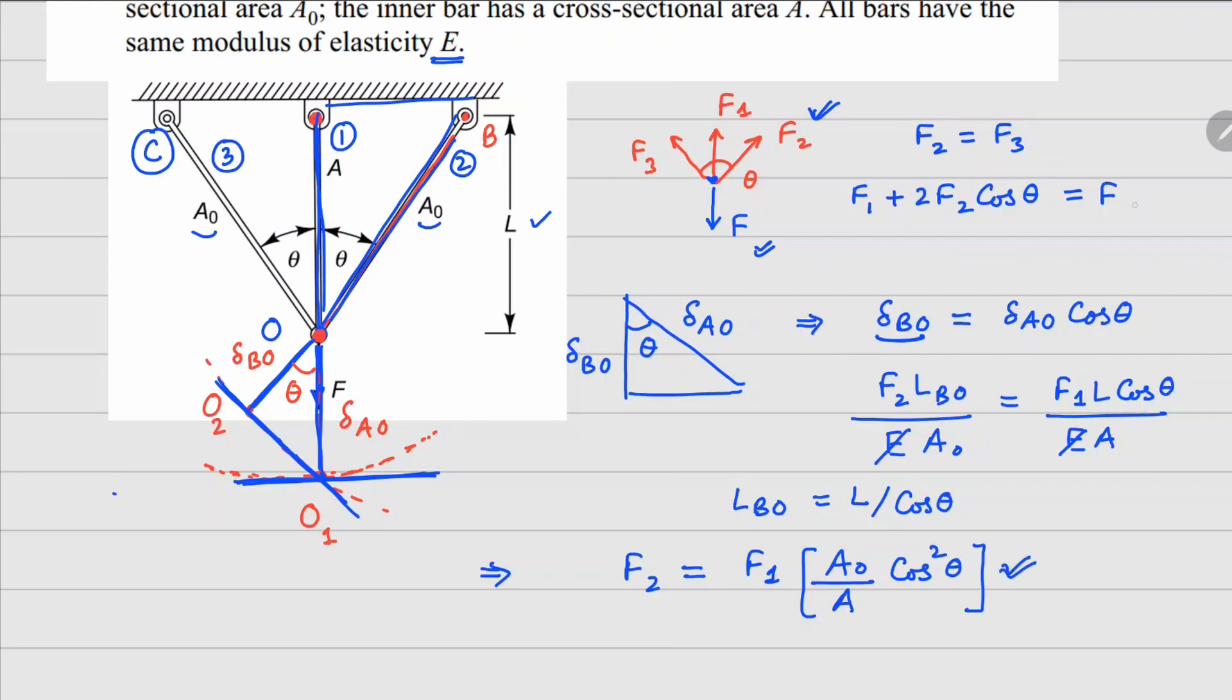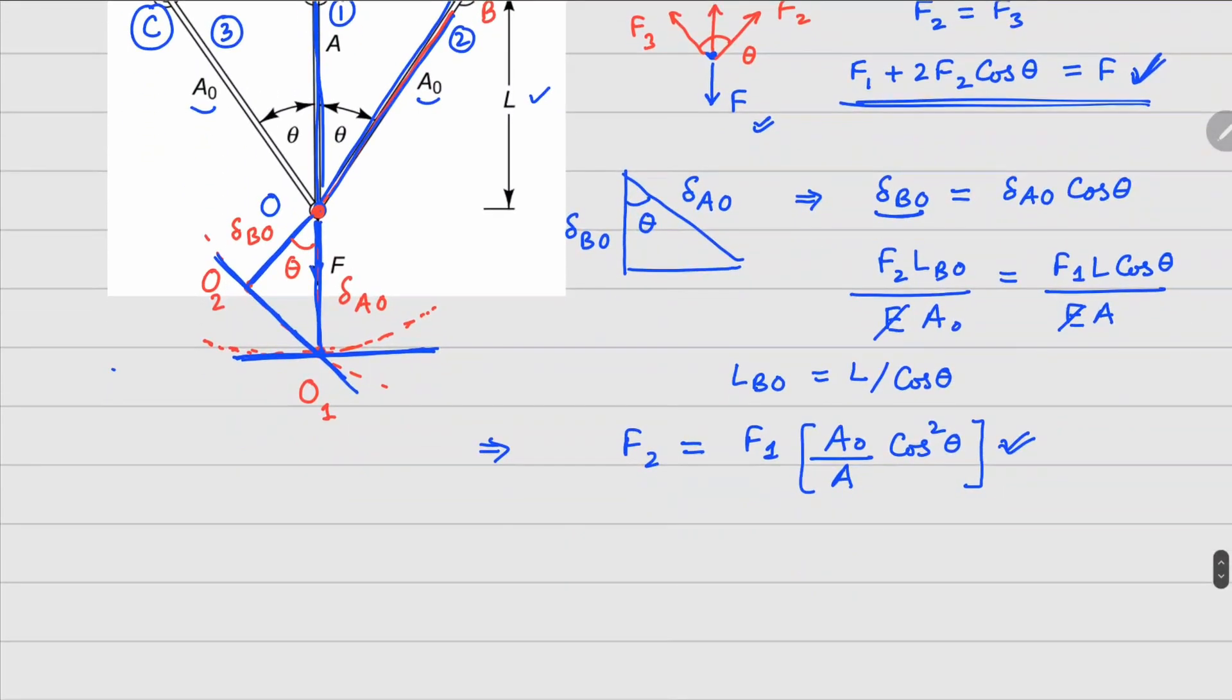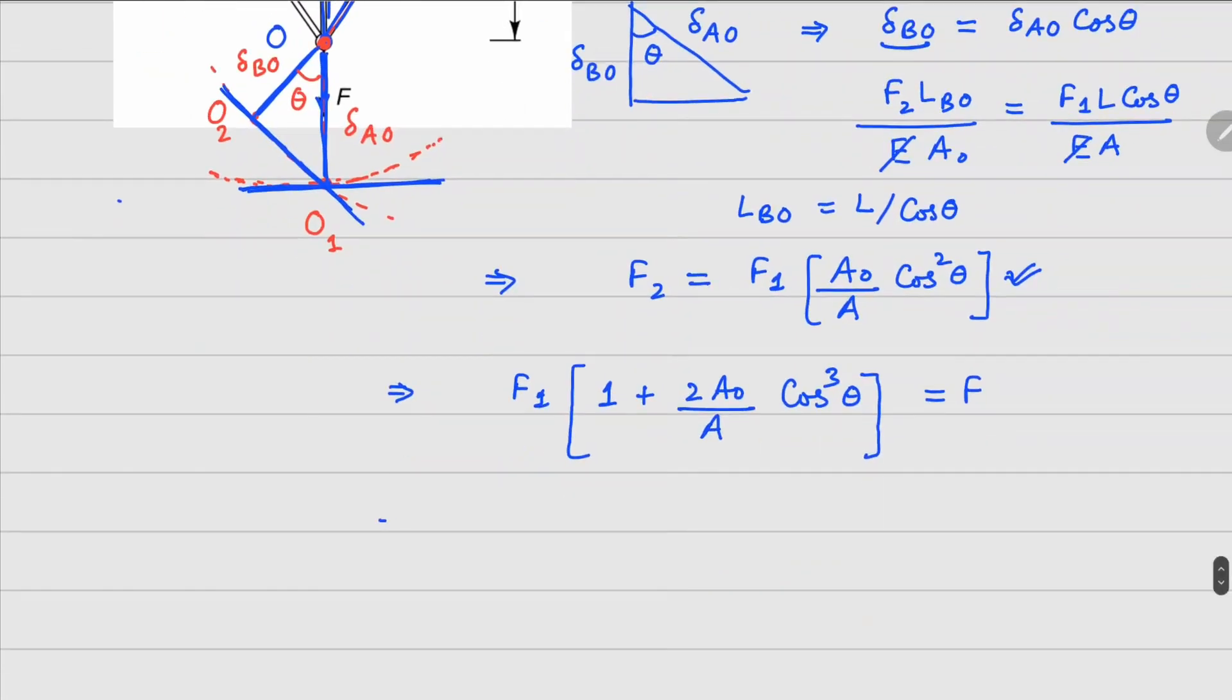So now I can take this value of F2 and substitute in this equation, which was your force balance equation right here. This gives us, if I take F1 common, I can get 1 plus 2 times A0 divided by A cos cubed theta, which equals to F. So I can write my F1 equals to F divided by 1 plus 2 A0 divided by A cos cubed theta.